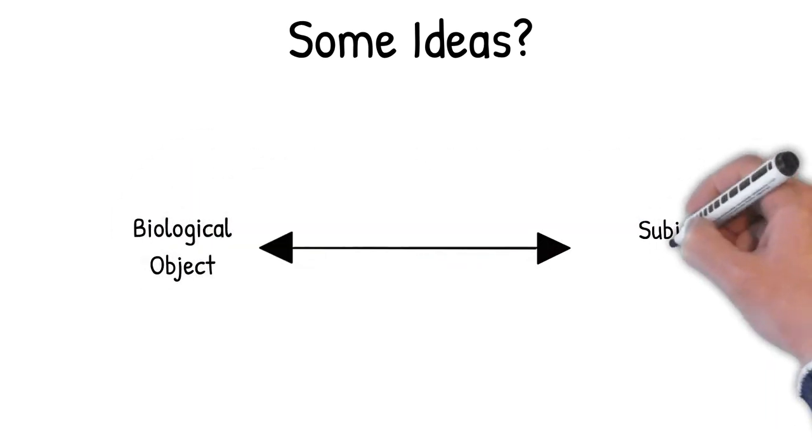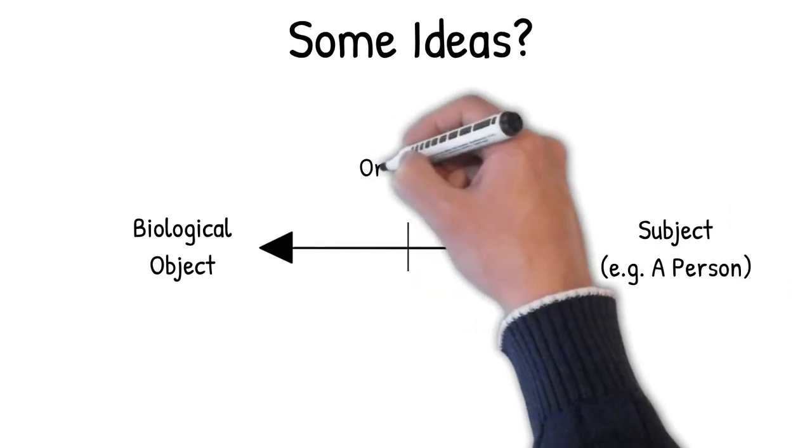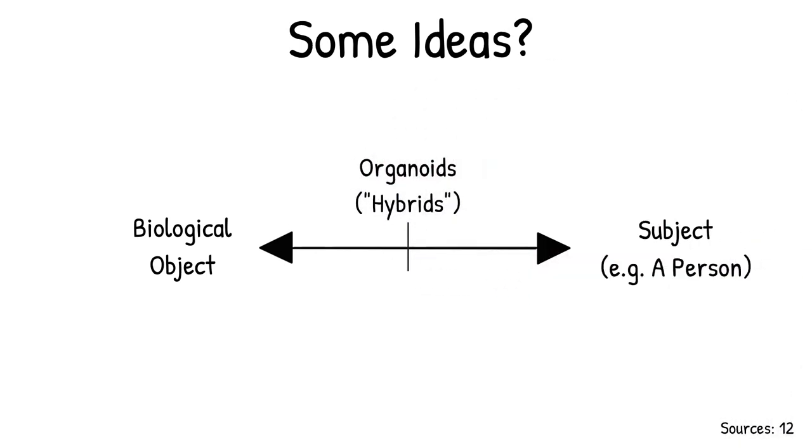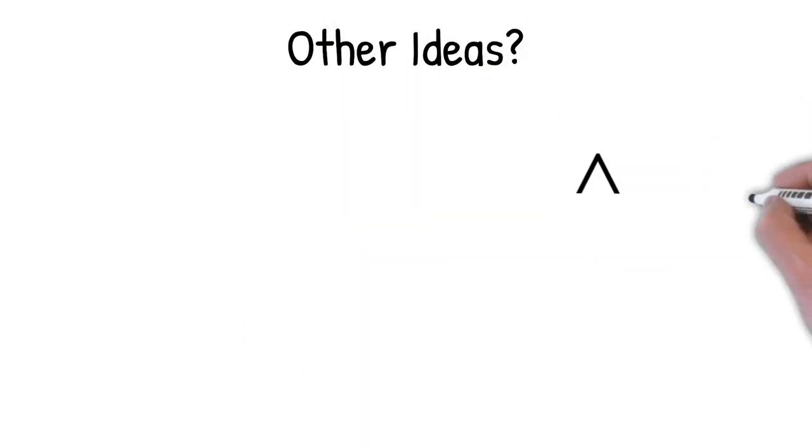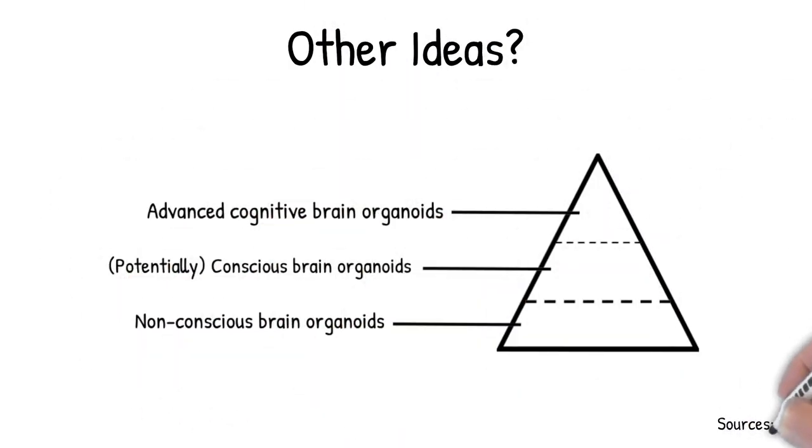Sarah Boers presents organoids as having a hybrid moral status, insofar as organoids may lie somewhere between the moral status of a subject and a biological object. Julian Koplin presents a moral framework of tiered principles for brain organoids, depending on their level of development. Bioethicists are only just beginning to have these conversations, and more will come.